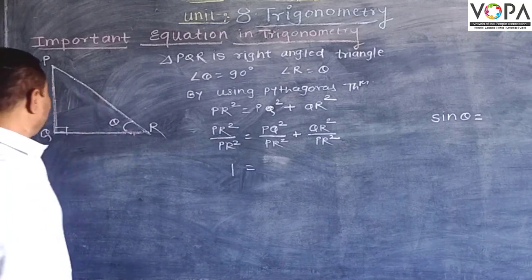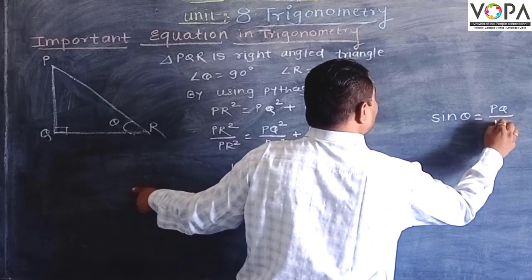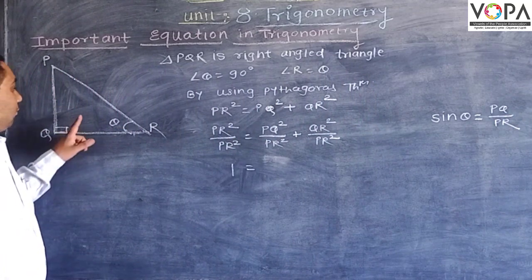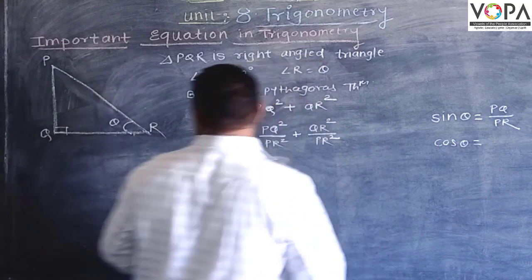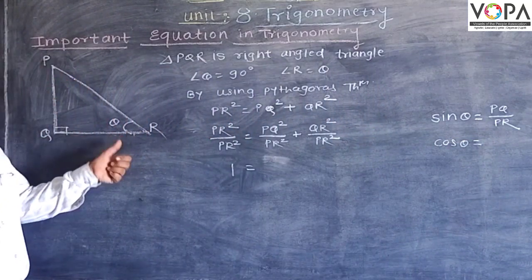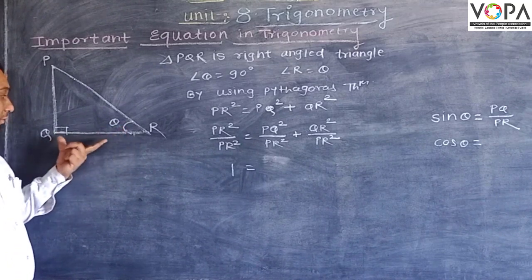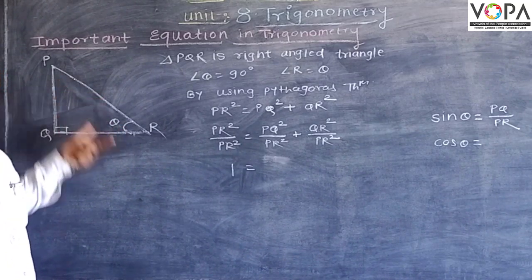What is the cosine ratio? Cosine of theta - let us see the figure. For this theta, QR is the adjacent side and PR is the hypotenuse, so therefore cosine equals QR upon PR.